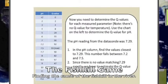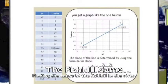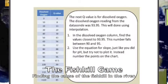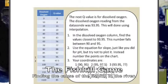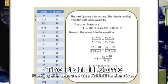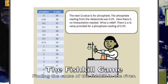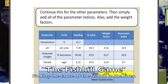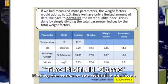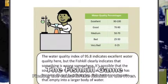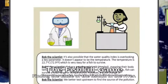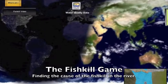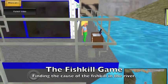Once all of the data is collected, the students can then walk through an example of how to calculate the water quality index value for each of the sites. The water quality index value assigns a score for each individual parameter, and the sum of those scores will then give you the water quality index. Once you have all of the WQI scores for each of the sites, you will then be able to determine the quality of the water.